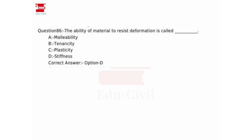Question: the ability of a material to resist deformation is called? It is not related to a sponge or spring. The correct answer is option D — stiffness. Malleability, tenacity, and plasticity are wrong. Option D, stiffness, is the correct answer. The ability of a material to resist deformation is called stiffness.